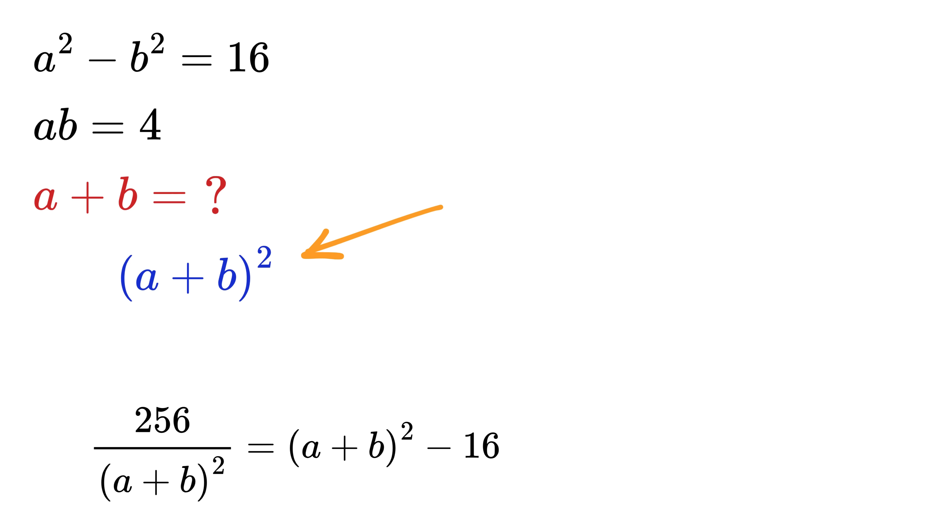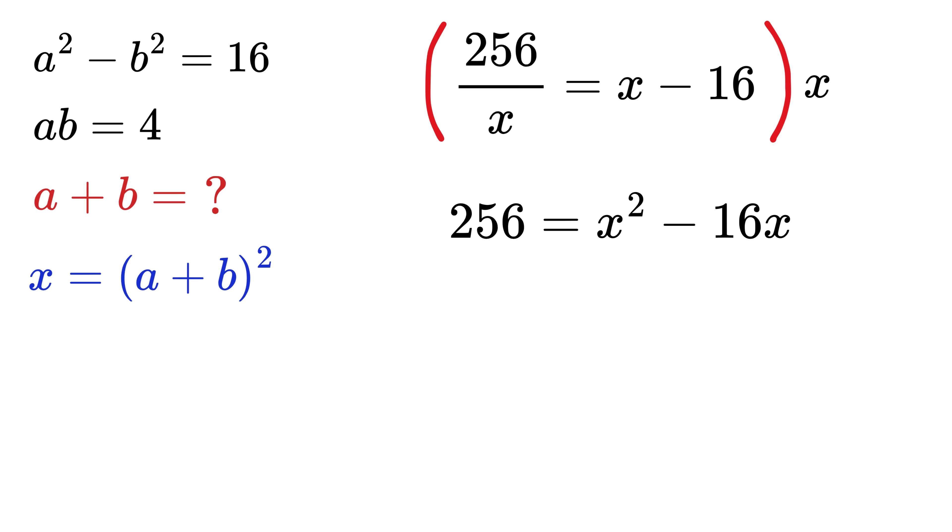Okay, let A plus B whole square equal some variable X. So we have 256 over X equals X minus 16. Multiply both sides by X to get 256 equals X squared minus 16X. Take this 256 here to get X squared minus 16X minus 256 equals 0.